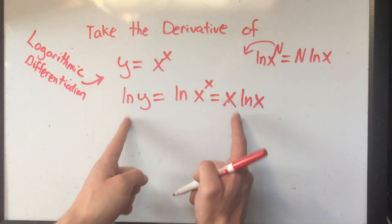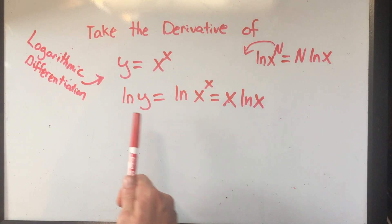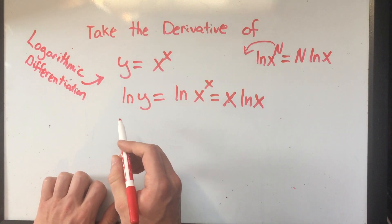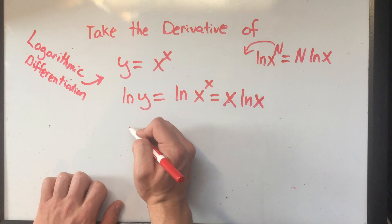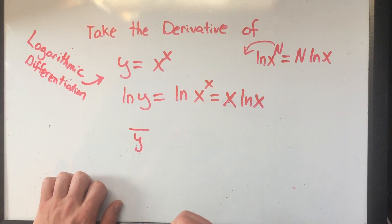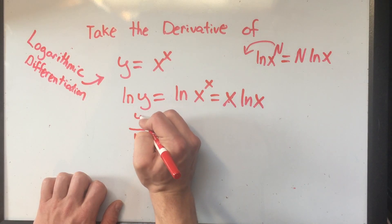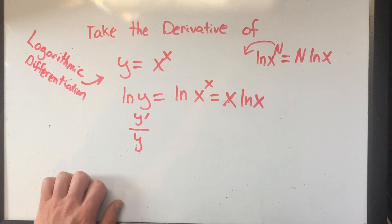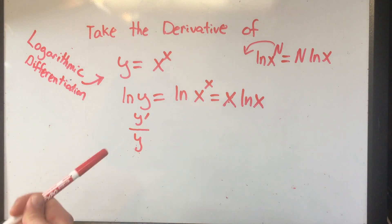I'm going to take the derivative of both sides. What's the derivative of the natural logarithm? Well, the rule is whatever is on the inside, in this case y, I put it on the bottom. And I put its derivative on top. Well, the derivative of y is y prime. Okay, or you might have seen that the derivative of ln of u is u prime over u. Here, I'm just going to do y prime over y.